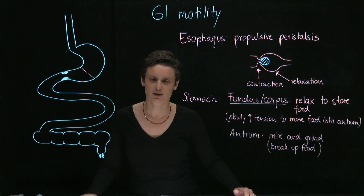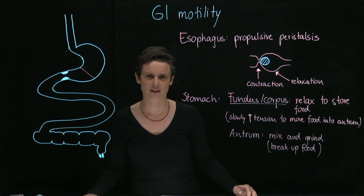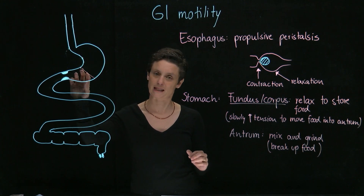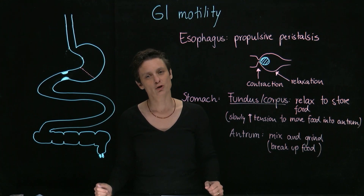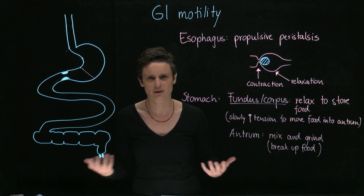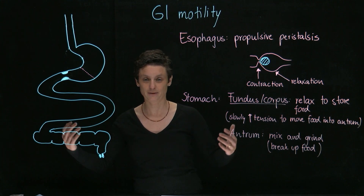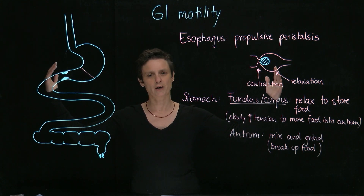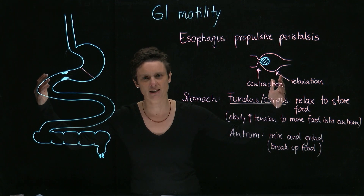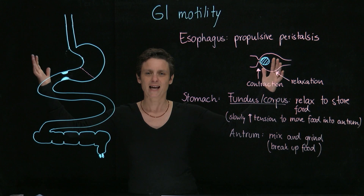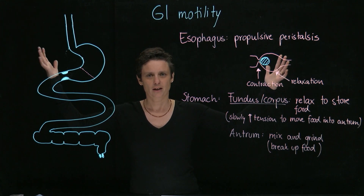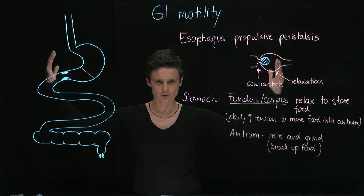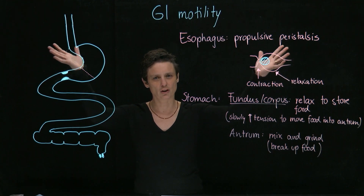Next we'll talk about the stomach. The stomach has two major functions, so we differentiate the first two parts — the fundus and the corpus — and then the antrum. The fundus and corpus are really here to store food; we want to eat as much as possible without getting pain, particularly around Thanksgiving. The fundus and corpus relax to store as much food as possible, and then very, very slowly move the food forward towards the antrum.